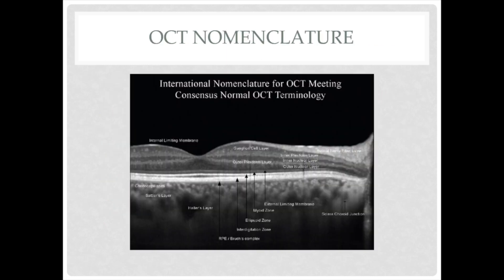Before going on to OCT in CSCR, we will see the OCT nomenclature. The international nomenclature for OCT states the following layers as the first hyperreflective layer from inside out: it is the internal limiting membrane, then the retinal nerve fiber layer, followed by the hyperreflective ganglion cell layer and the inner plexiform layer.